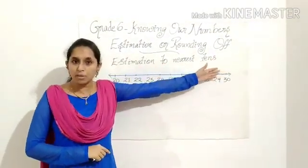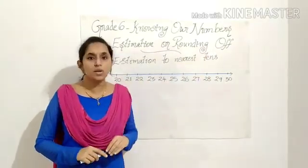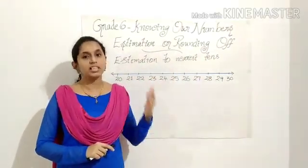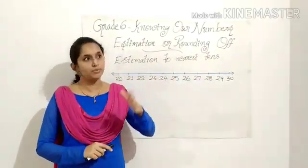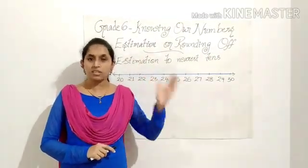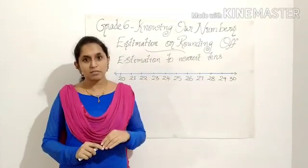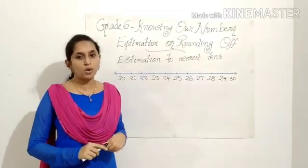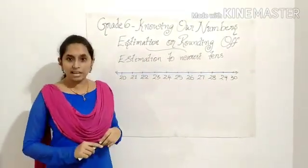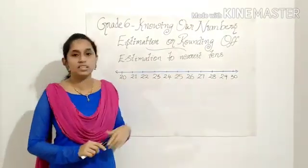Children, you have to remember nearest tens means multiples of 10 — that is 10, 20, 30, 40, 50, and so on; 100, 110, 120, etc. Keeping that in mind, you can see a number line in which I have written numbers from 20 to 30.